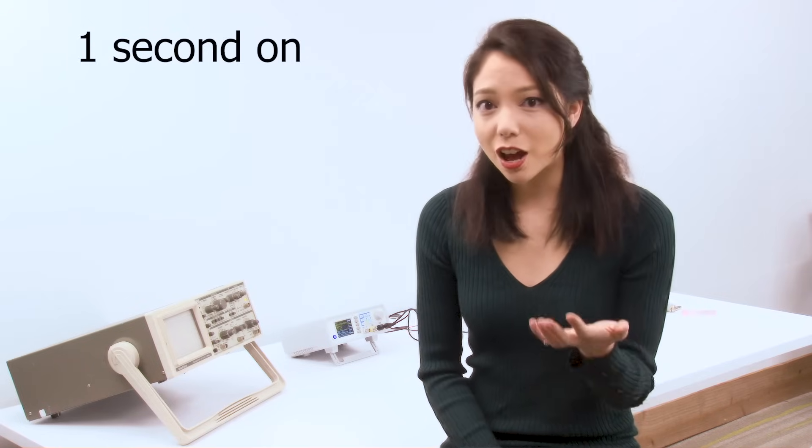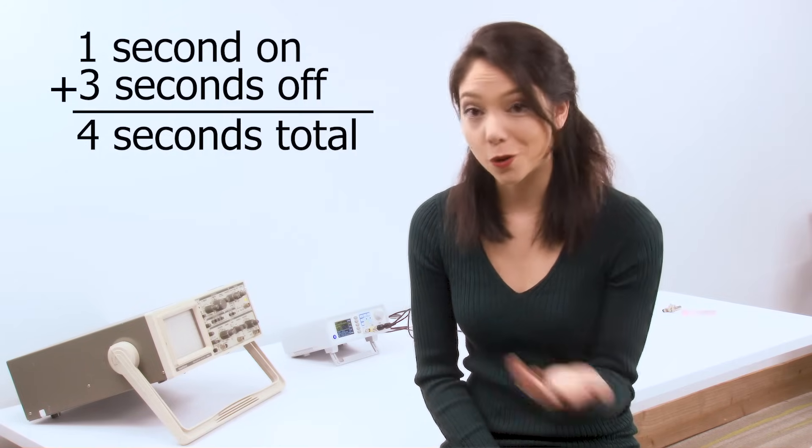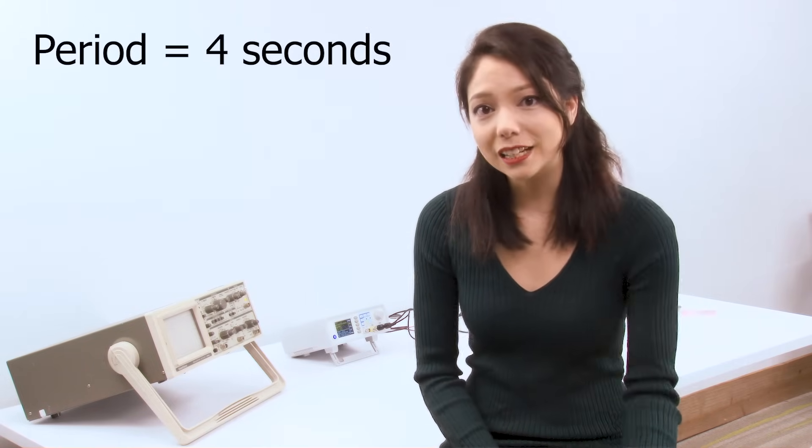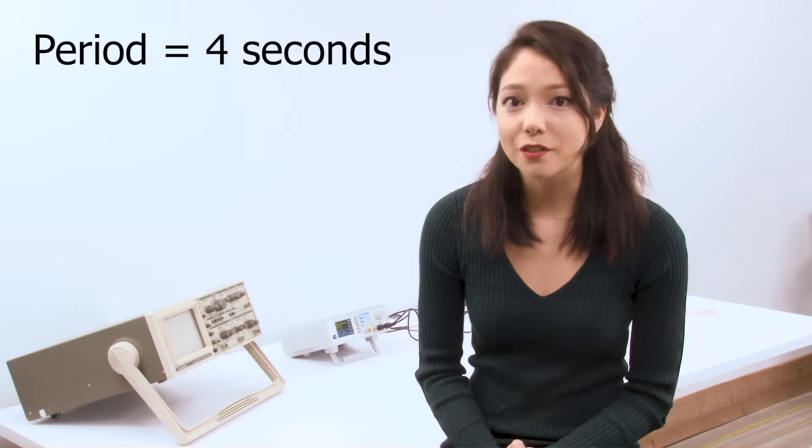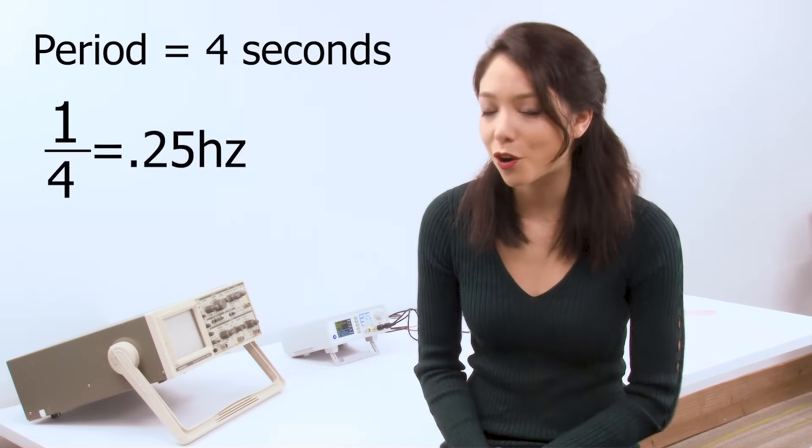In a slightly harder example, now the lamp blinks on for one second, then off for three seconds. So what's the new frequency of the blinking light? In this case, it's easier to calculate the period first, which is one second on plus three seconds off, giving us four seconds. So if our period is four seconds, all we have to do is divide one by four seconds to get a frequency of 0.25 hertz.